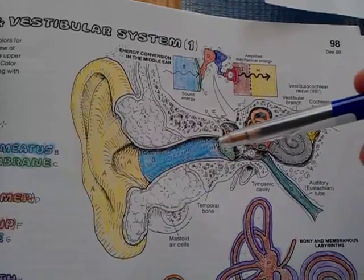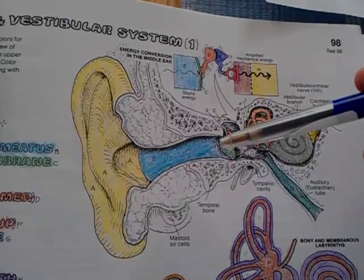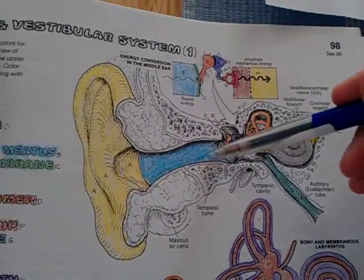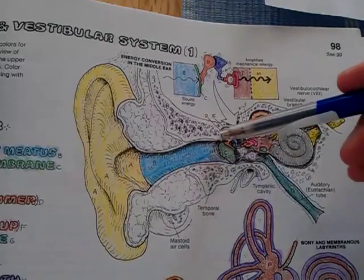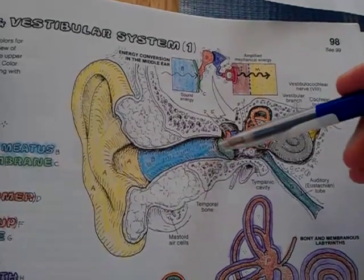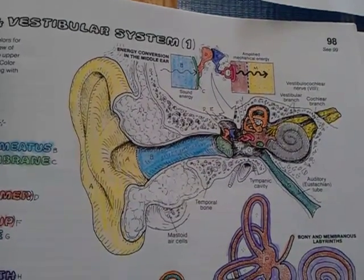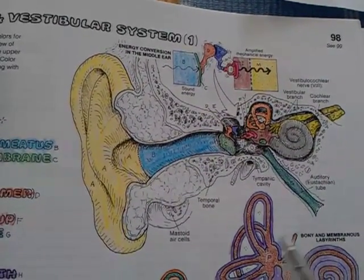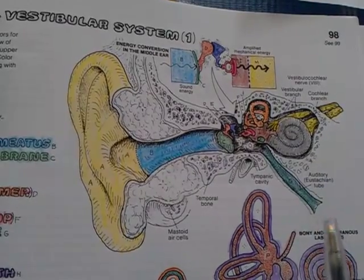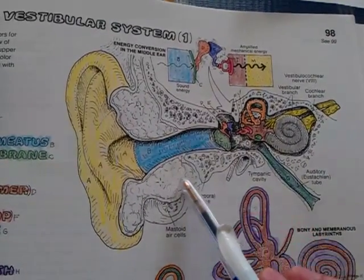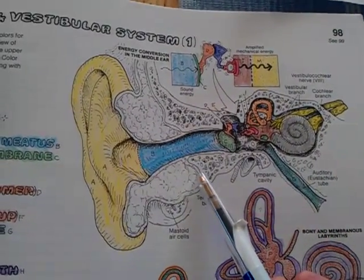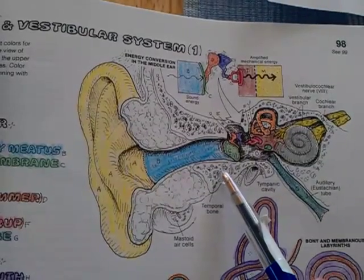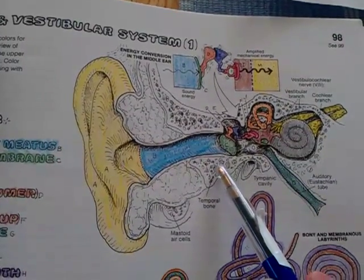Medially, the osseous part is marked by a circular groove called the tympanic sulcus, in which the tympanic membrane is anchored. The osseous part is formed by the tympanic and squamous parts of the temporal bone.